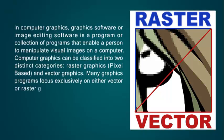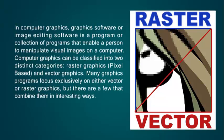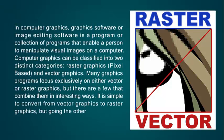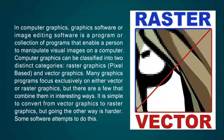The two categories are Raster Graphics, which are pixel based, and Vector Graphics. Many graphics programs focus exclusively on either vector or raster graphics, but there are a few that combine them in interesting ways. It is simple to convert from vector graphics to raster graphics, but going the other way is harder, though some software attempts to do this.